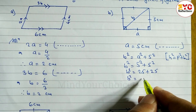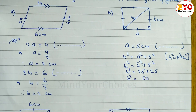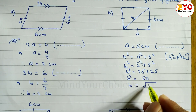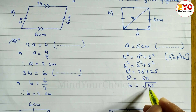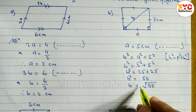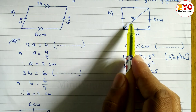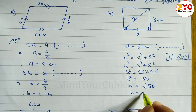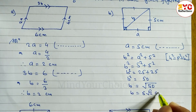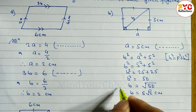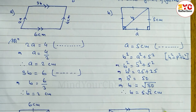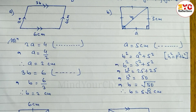So b squared is equal to 25 plus 25, which gives us 50. Therefore b is equal to root under 50. We write positive root only because length is always positive. So b is equal to 5 root under 2 centimeters. The value of a is 5 centimeters and the value of b is 5√2 centimeters.